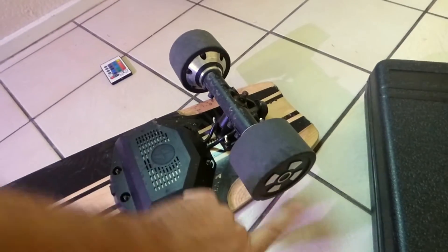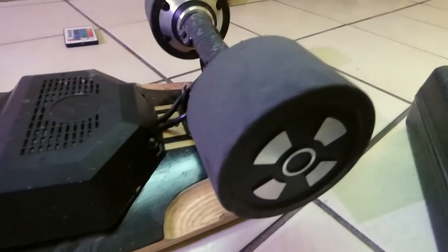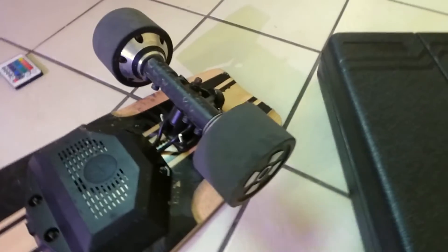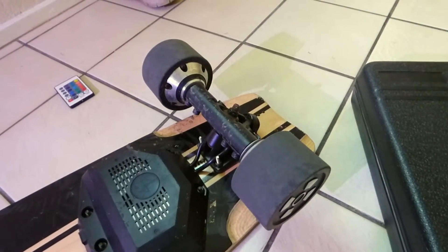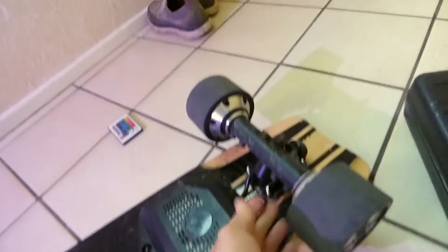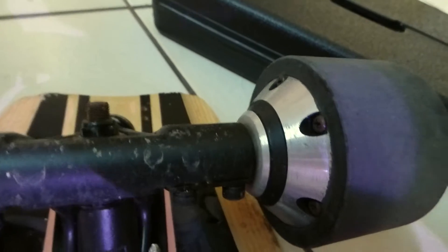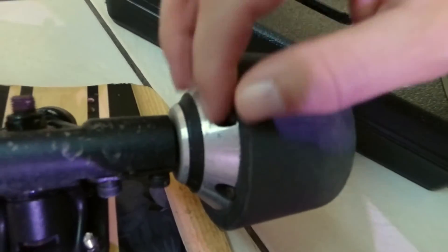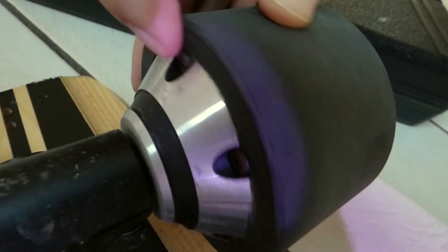Especially on this particular hub motor that seems to be used by other brands like Meepo, Wowgo and actually many others now. So I'm going to probably first start by taking off these bolts there and then hopefully we'll be able to maybe take this off. There's little screws here all around the wheel.